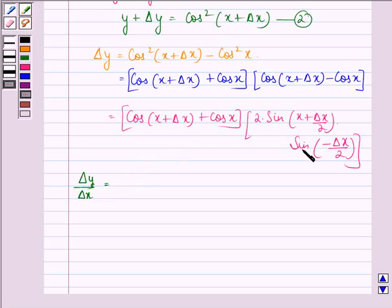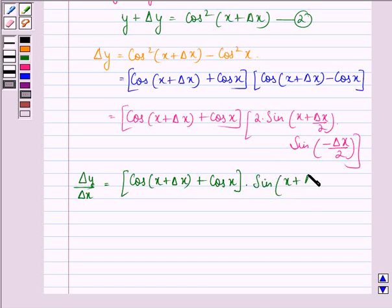We see that sin of minus theta equals minus sin theta. So we can now write this as minus cos of x plus delta x plus cos x, times sin of x plus delta x by 2, times sin of delta x by 2, the whole divided by delta x by 2.